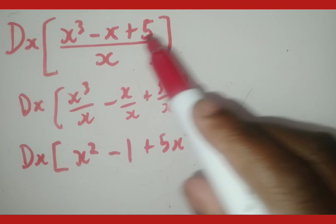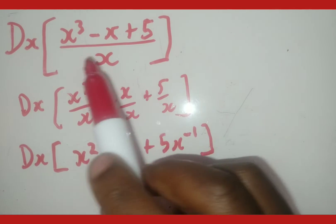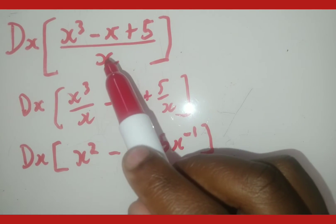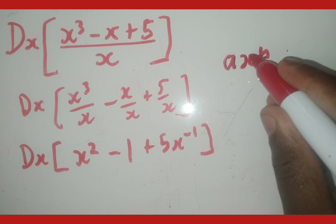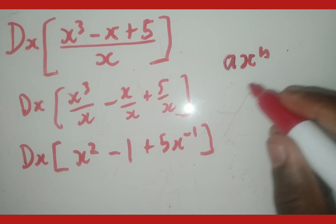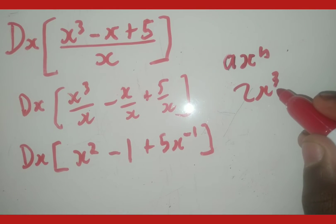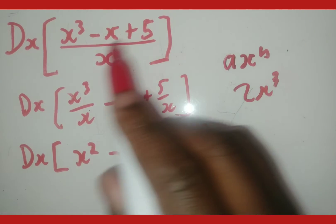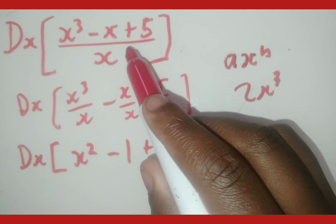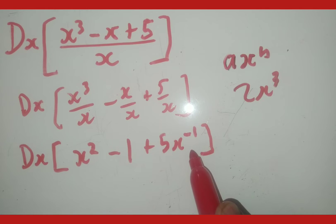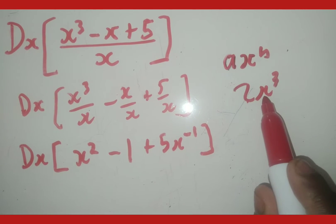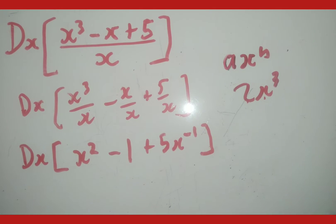Why are we doing all this instead of deriving immediately? The reason is that the whole thing is not in a differentiable form. A differentiable form is anything in the form of a times x to the power of n — for instance, 2x cubed is in a differentiable form. Unless something is in a differentiable form, we cannot derive it. So we manipulate the expression to put it in a differentiable form.